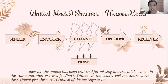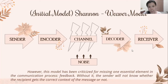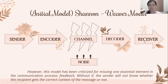Then we have the channel, which is an infrastructure that gets the information from the sender through the decoder and receiver. It is the medium of communication. We also have the element of noise that interrupts the communication process. A decoder is a device that decodes the message and converts the signals into a format that the receiver will understand. Then the receiver is the endpoint of the communication process — that is when he or she gets the message.